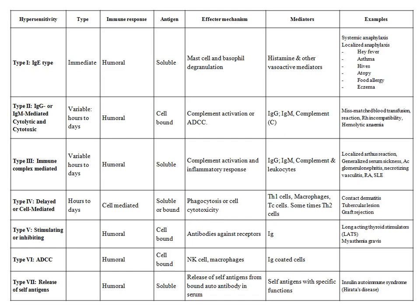Type 1 is IgE-mediated hypersensitivity. This is an immediate type involving the humoral arm of immunity. The antigen is soluble, which cross-links two IgE antibodies on mast cells and basophils, leading to degranulation and release of histamine and other vasoactive amines.